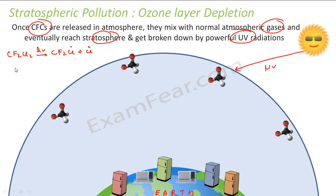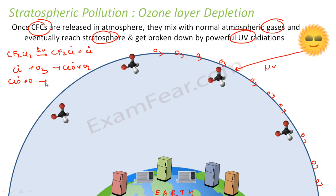Then chain propagation occurs. The chlorine free radical (Cl•) reacts with ozone (O3) to give ClO• and O2. That ClO• radical then reacts with atomic oxygen (O) to give O2 and regenerate Cl•. So the Cl• radical is continuously regenerated — it destroys one ozone molecule, gets reformed, destroys another ozone, and so on. One Cl free radical can destroy millions of ozone molecules.